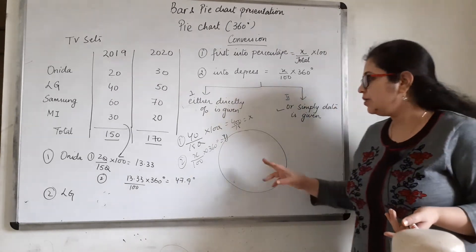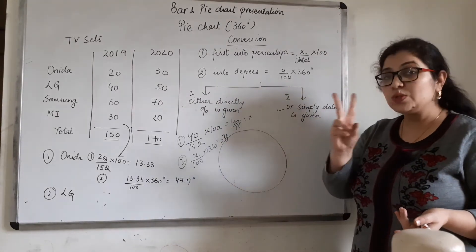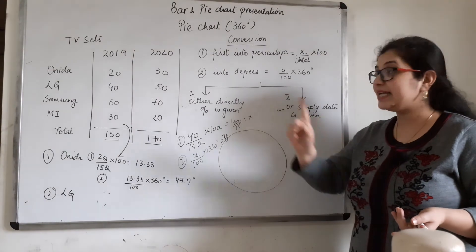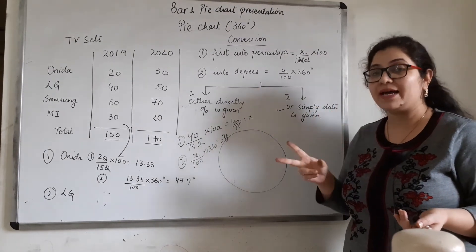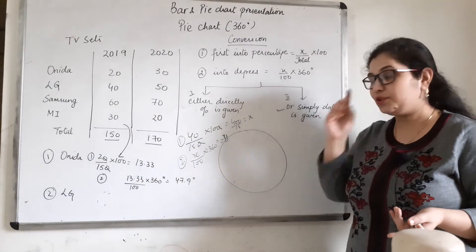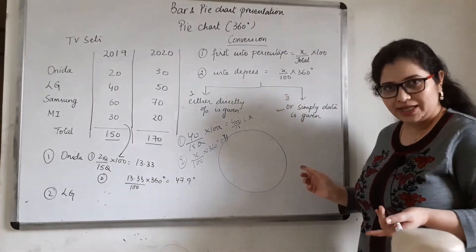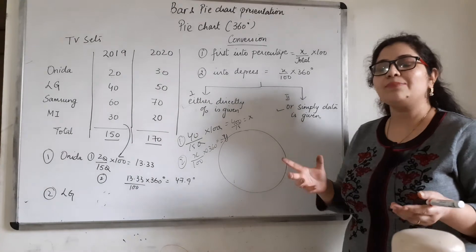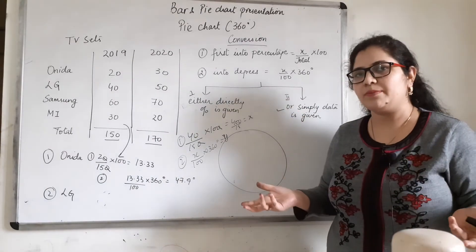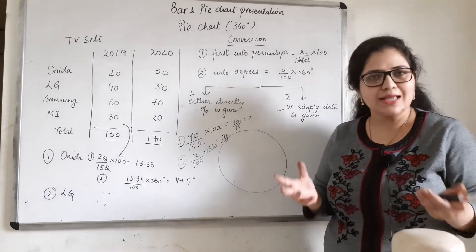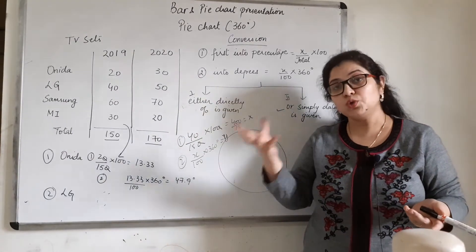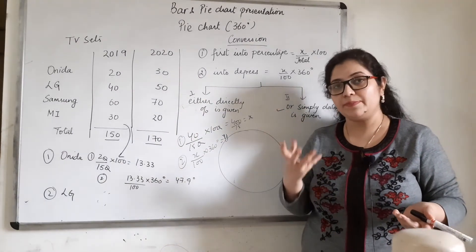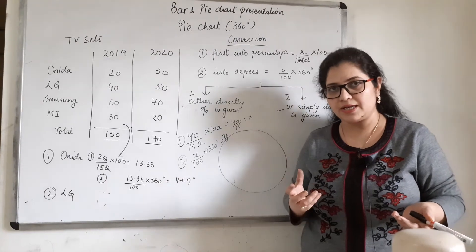We will make two separate pie charts — one for each year. In two years, we make two different pie charts, or two different circles, because you are depicting two years of data. If you have two sets of data in the exam, then you have to make two pie charts.